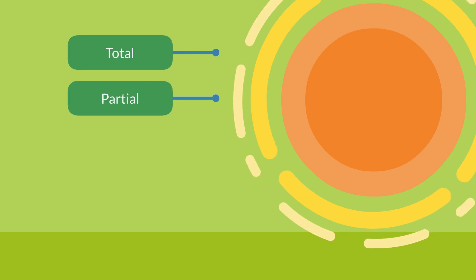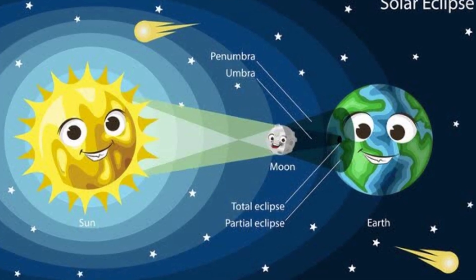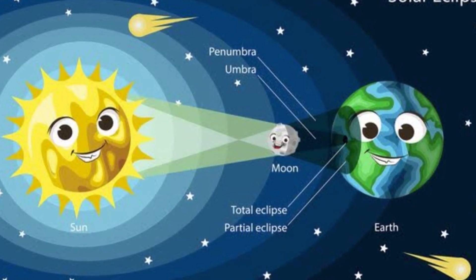There are three types of solar eclipses: total, partial, and annular. Each one is a unique spectacle that depends on the positions of the sun, the moon, and the earth.